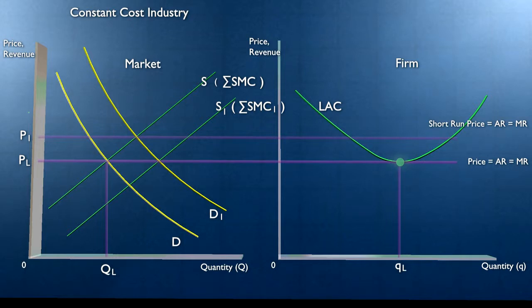New firms will go on entering the market until the price is driven back to the point where firms can only just cover costs of production. At this point, there's no incentive for new firms to enter the market. So the reason why firms are not going to make profits above the normal level in the long run is freedom of entry of new firms being attracted into the market.